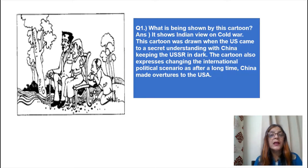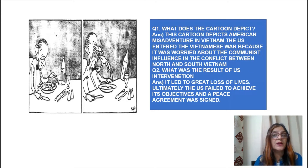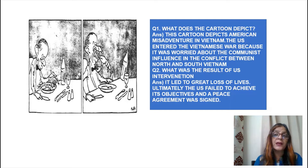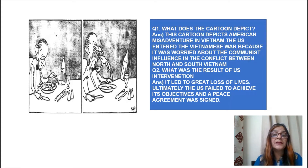The second cartoon is also from the same chapter. This cartoon depicts the American misadventure in Vietnam. The US entered the Vietnamese war because it was worried about communist influence in the conflict between North and South Vietnam. Vietnam can be considered one of the areas of the Cold War, with North and South Vietnam operating under two different ideologies — communist and capitalist. The US feared communist influence spreading, which is why it got involved in the war. The result was a great loss of lives; ultimately the US failed to achieve its objectives and a peace agreement was signed.